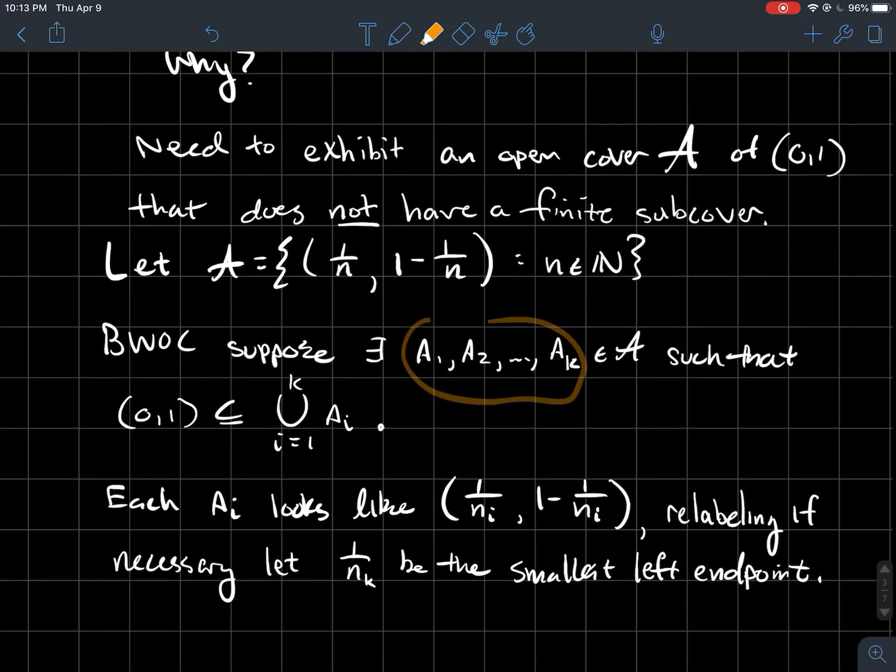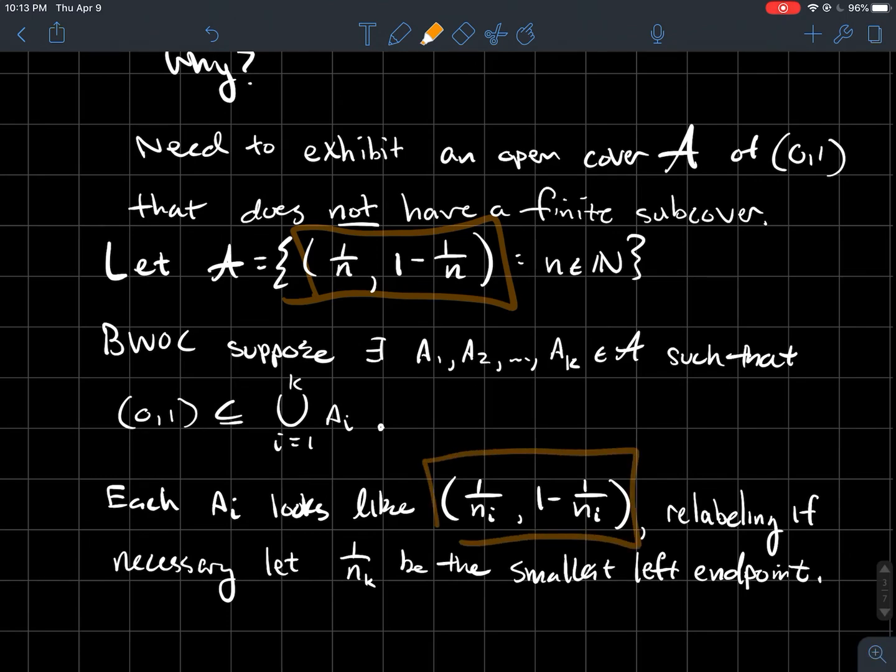So what would that mean then? Well, I know that each one of these A's, they look like this. So it makes sense then. Let's say A_i is 1 over n_i, 1 minus 1 over n_i.